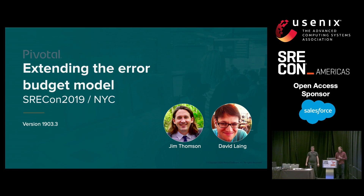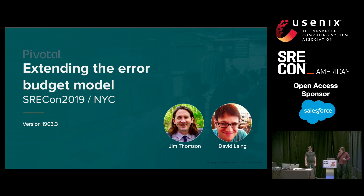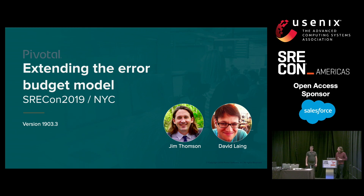Pivotal produces a platform-as-a-service product called Cloud Foundry, which you may have heard of. Our background is that we work with our customers and our development teams trying to influence the systems that keep everybody upgraded and patched. What we want to talk about today is how we can use the error budget model — that I hope many of us know and love — to manage some other things.